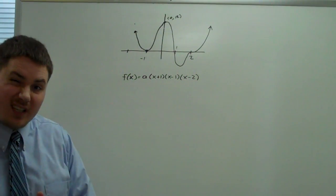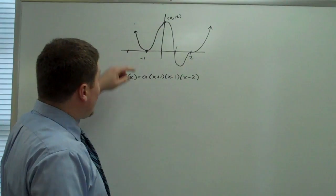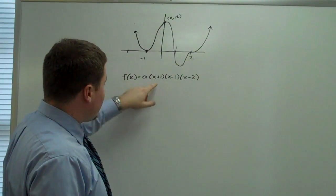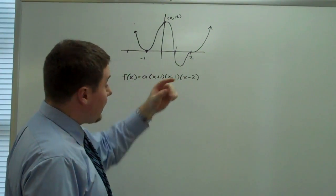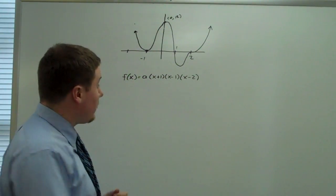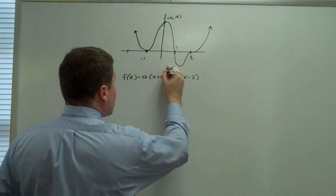Now, the multiplicity of these roots we need to consider. So the multiplicity of the root at negative 1, which corresponds to this factor, seems to be multiplicity 2. It wants to go down and come up, so that's two actions at the same place. So that's going to be squared.